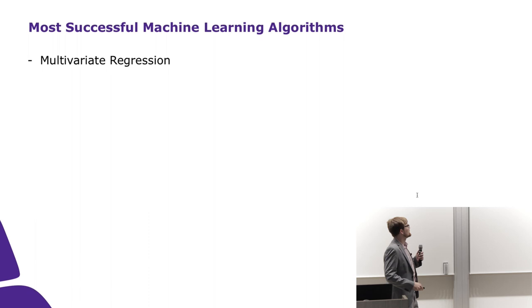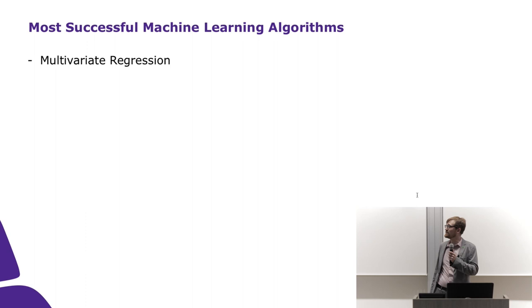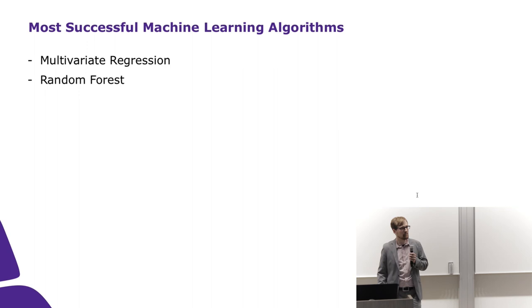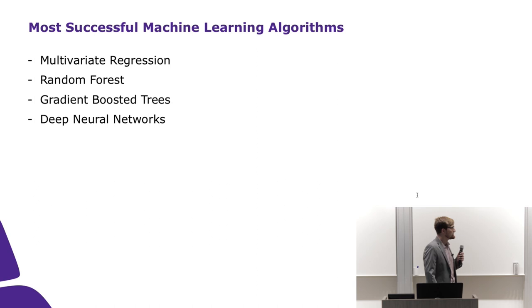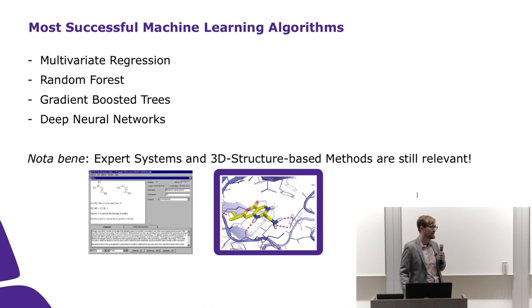Our most successful machine learning algorithms are still old-school multivariate regression, particularly for physicochemical properties. Overall, random forest is probably the most important machine learning algorithm, followed by gradient boosted trees, and more and more we find time for deep neural networks.